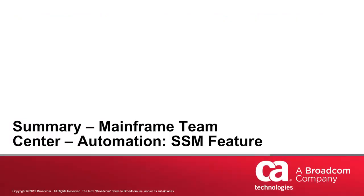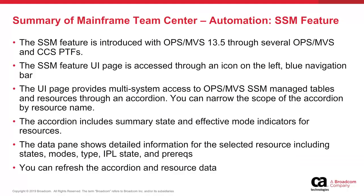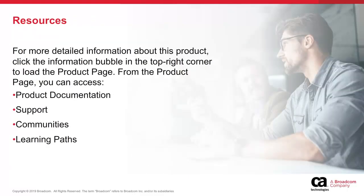In this video we covered Mainframe Team Center Automation SSM feature. In summary, the SSM feature is introduced with Ops MVS 13.5 through several Ops MVS and CCS PTFs. The SSM feature UI page is accessed through an icon on the left blue navigation bar. The UI page provides multi-system access to Ops MVS SSM managed tables and resources through an accordion. You can narrow the scope of the accordion by resource name. The accordion includes summary state and effective mode indicators for resources. The data pane shows detailed information for the selected resource including states, modes, type, IPL state, and prereqs. You can refresh the accordion and resource data. For more detailed information about this product, click the information bubble in the top right corner to load the product page.